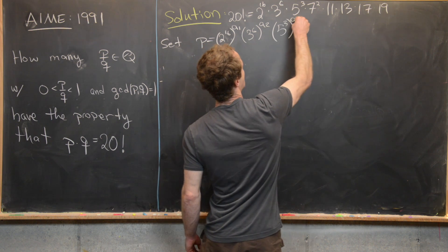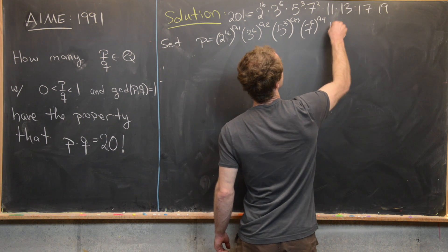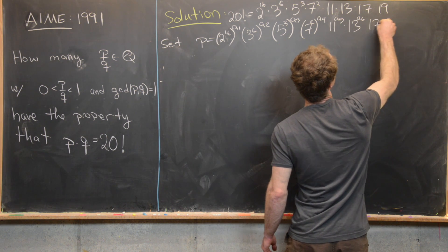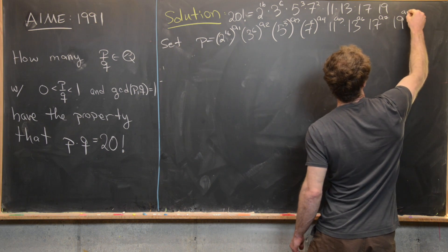7 squared to the A4, 11 to the A5, 13 to the A6, 17 to the A7, and finally 19 to the A8.